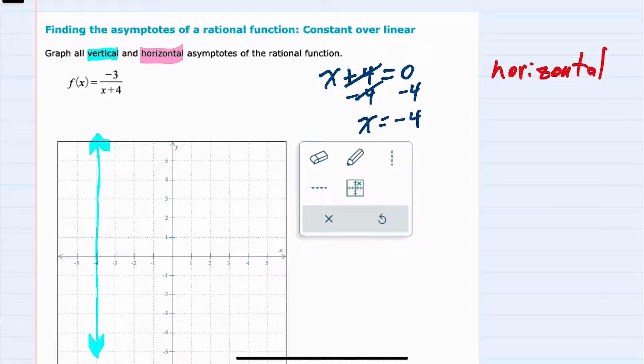To find the horizontal asymptotes, we need to compare n, which is the degree of the numerator. Since I don't have an x in the numerator, my degree is 0.